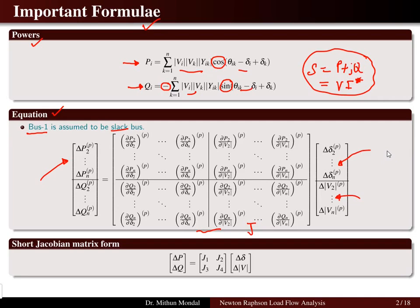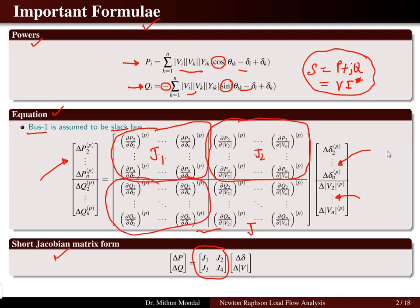The Jacobian matrix is a square matrix written in compact form as J1, J2, J3, and J4 — block diagonal matrix components. The power mismatch is written in compact form as delta P and delta Q, and the phase angle and voltage magnitude mismatch is written as delta-delta over delta-voltage.